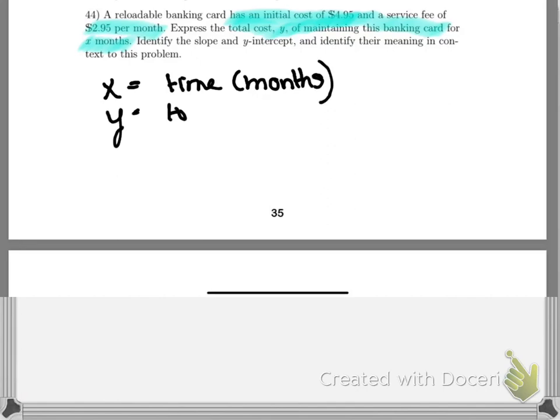Y is your total cost, and we're just going to assume that we're talking about U.S. dollars. They want the slope and the y-intercept and their meaning.